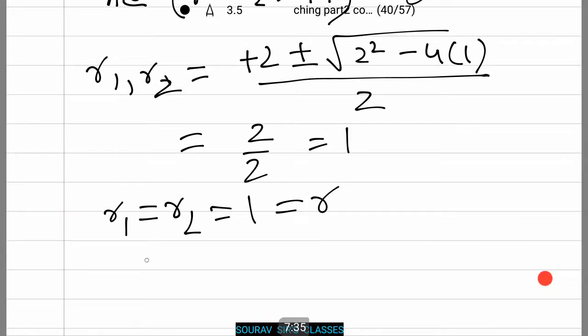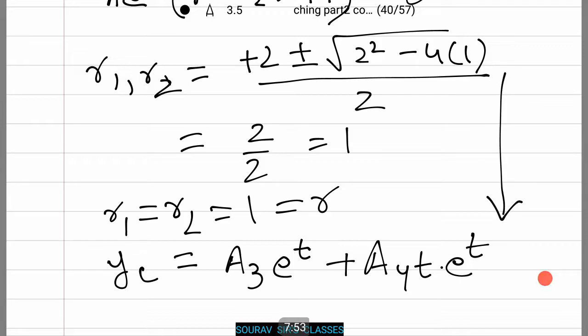Let's assume this as r. Thus we have repeated real roots. Thus the complementary function yc equals A₃e to the power t plus A₄t times e to the power t. And that's a very simple process that brought us here. Now when you're given a proper differential equation, you'll find the particular integral, which I have done in a separate video, and you add this complementary function, and there you have it—you have solved the whole higher order differential equation.